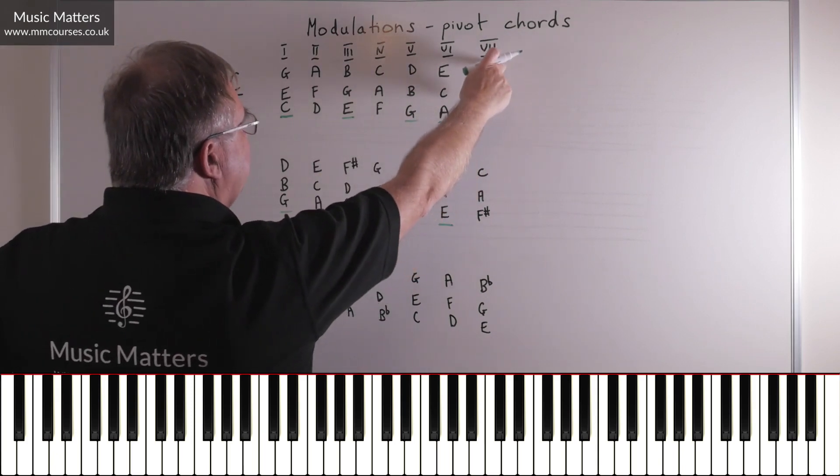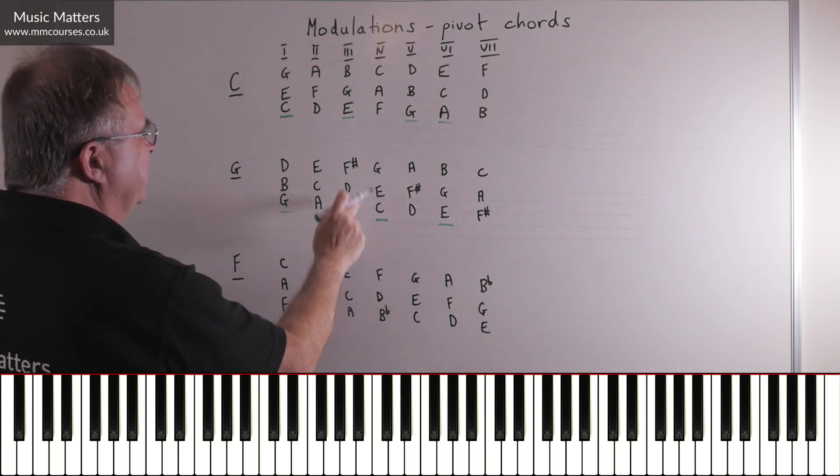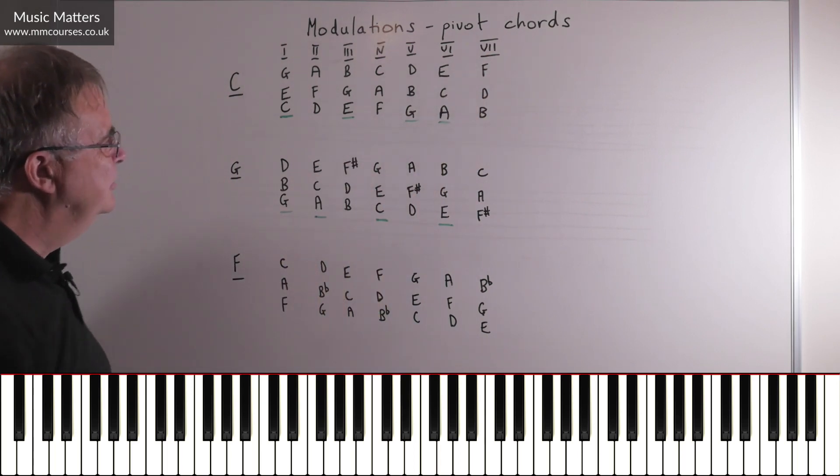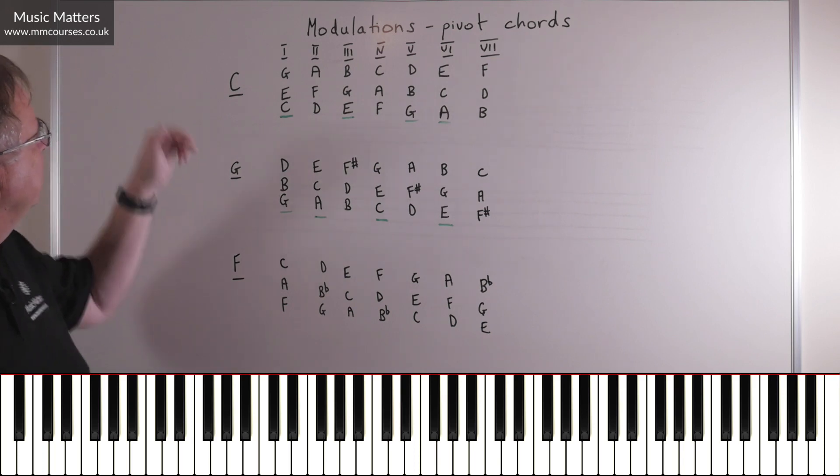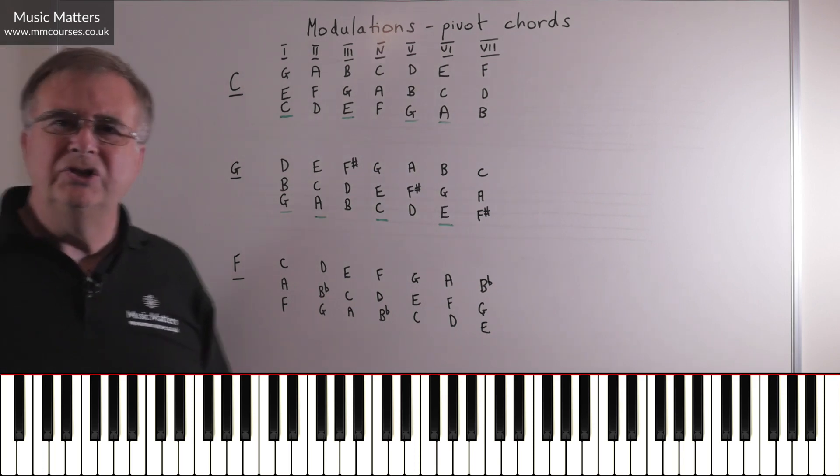What about B, D, F? Not really, B, D, F sharp. So not a great pivot chord, but do you see, just looking at it like this, you've already isolated the four pivot chords that are common to C major and G major.